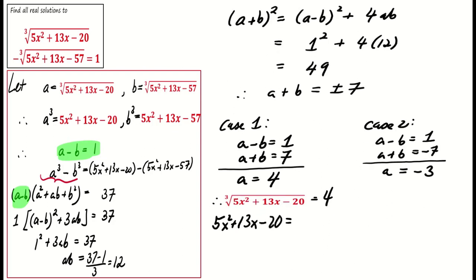Recall that a is the cube root of 5x² + 13x - 20. Hence, we obtain a quadratic equation if a = 4 as follows. Solving the equation gives x = -28/5 or x = 3.